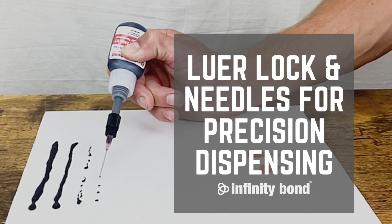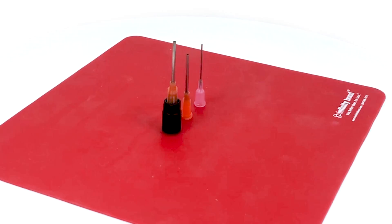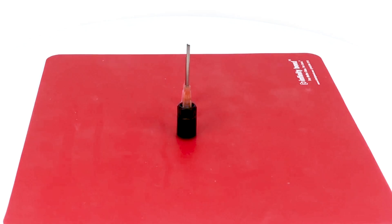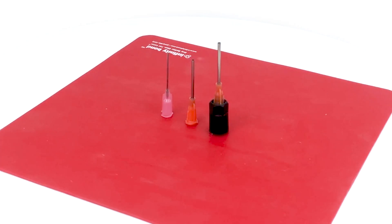Today we're going to break down lure locks and needles for precision dispensing superglue and two-part adhesives. This easy to use adapter is a must-have for when you need to apply precise amounts of adhesive or for dispensing in hard to reach areas.